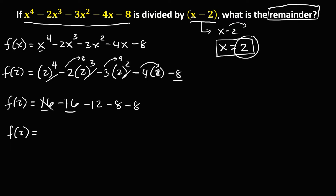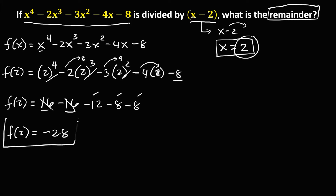So f of 2 equals positive 16, negative 16 — that's 0. Then negative 12 and negative 8 is negative 20. And negative 20 minus 8 is negative 28. So the remainder is negative 28.